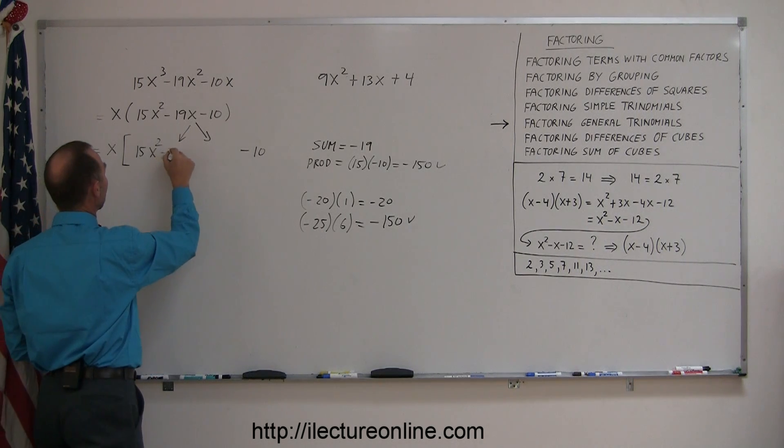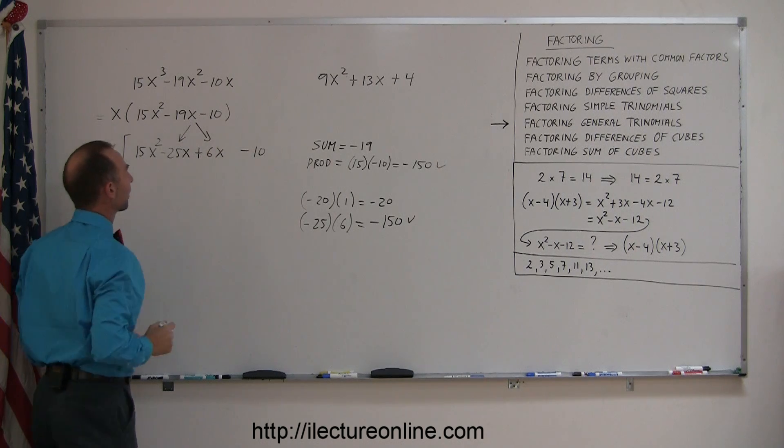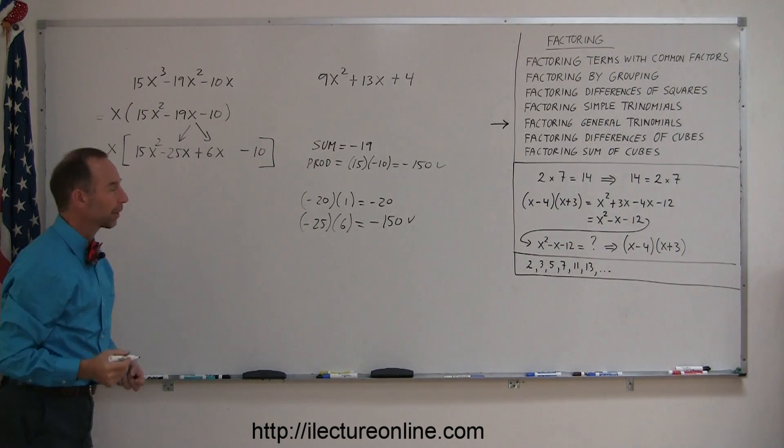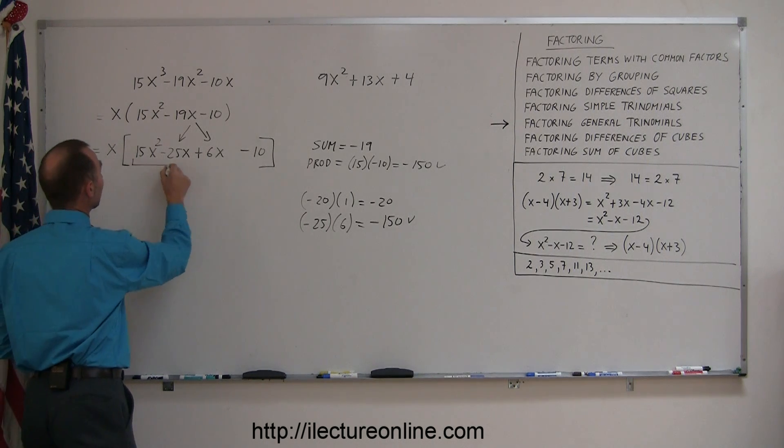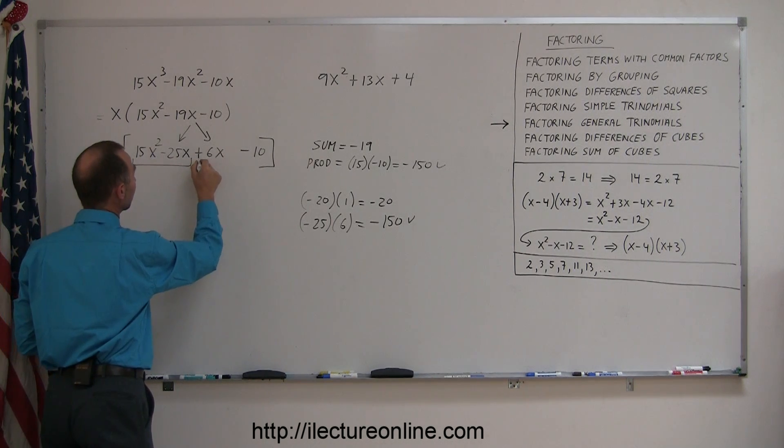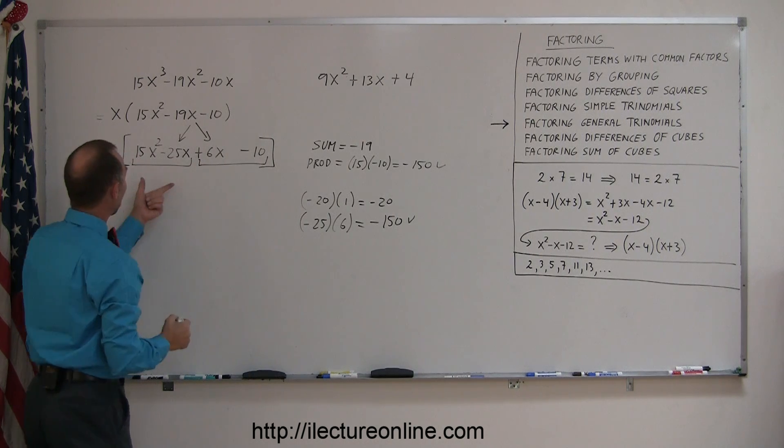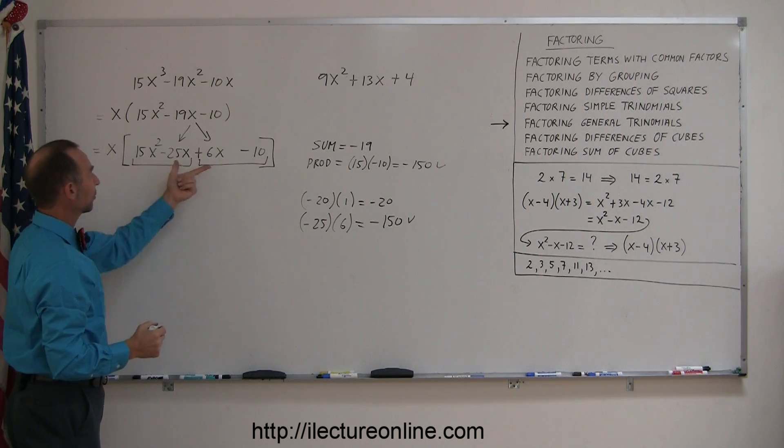So it goes in here, minus 25x and a positive 6x. Close the bracket. There we go. Alright, now I'm ready to continue. The trick again is to group them together into two groups of two.